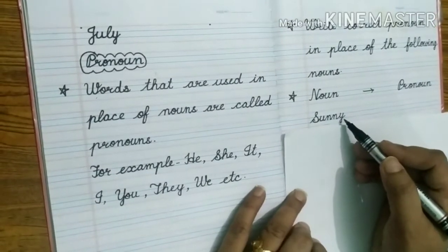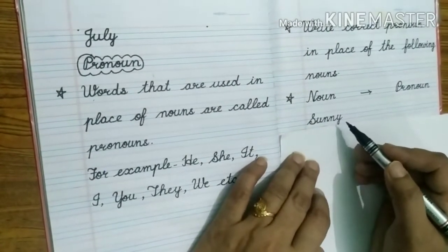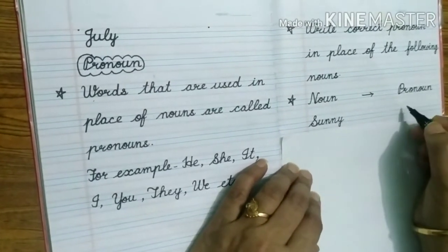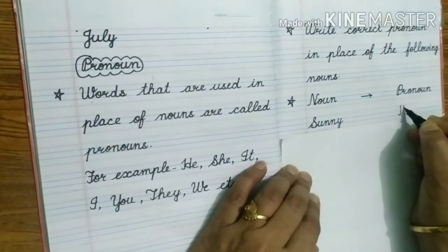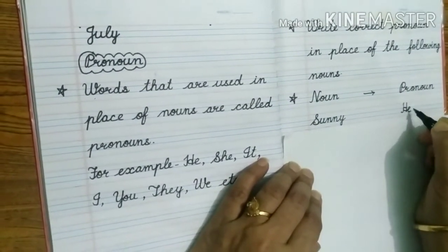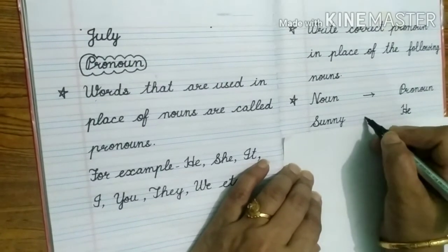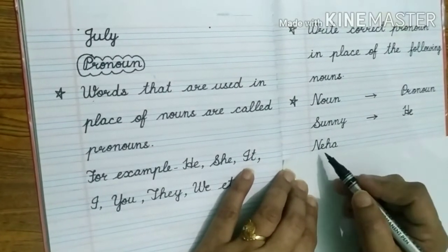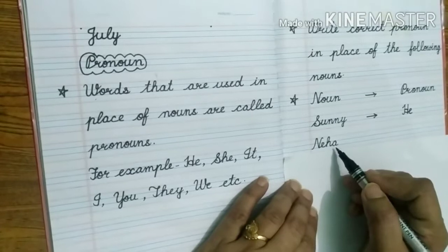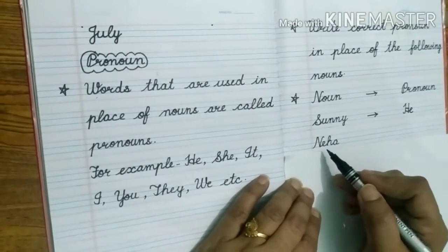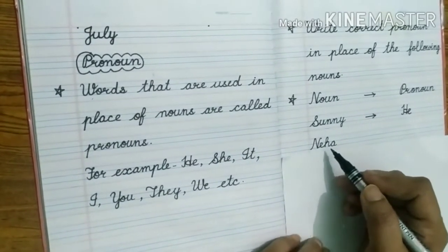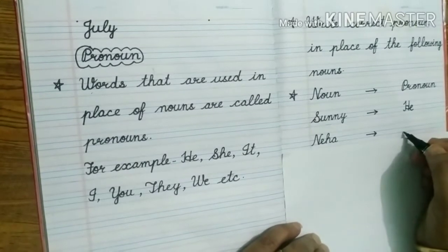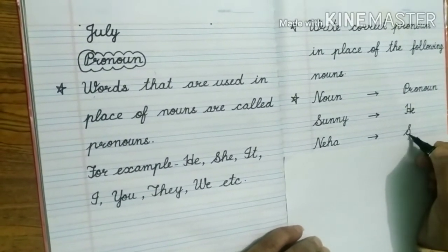As Sunny is a boy, so we will use the pronoun he in the place of Sunny. We will use he in place of Sunny. After that we have the name Neha. As you know that Neha is the name of a girl, so we will use she in place of Neha.